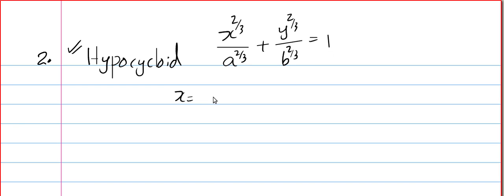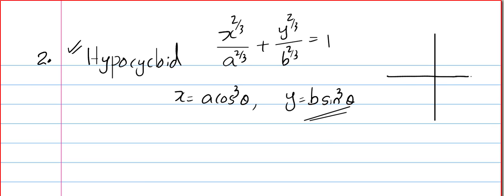The parametric form is x = a cos³θ and y = b sin³θ. The graph is the same shape as the asteroid but can be stretched — the x-extent is a and the y-extent is b, so they need not be equal. It is still a symmetric figure, so finding the area in one quadrant and multiplying by 4 gives the total area.